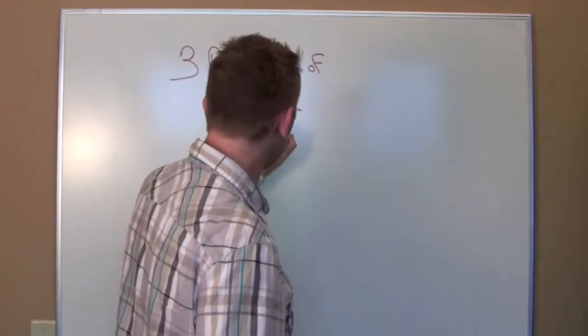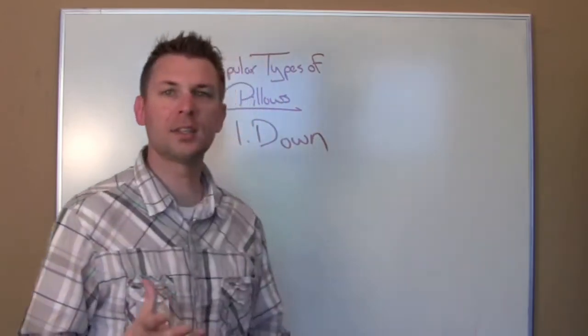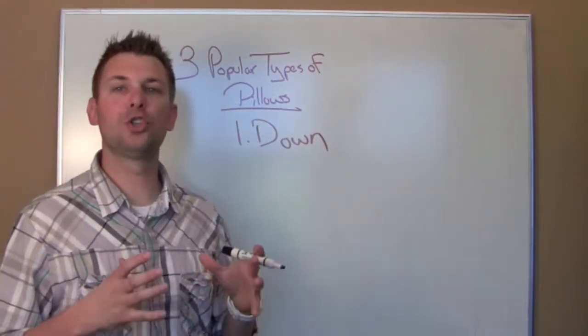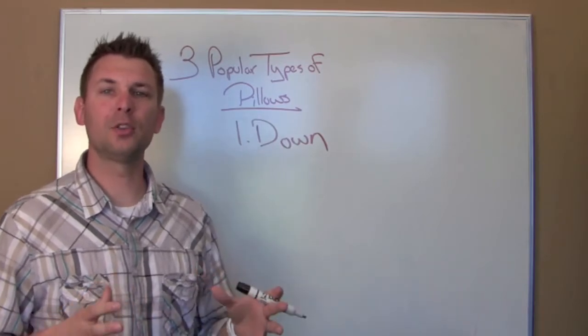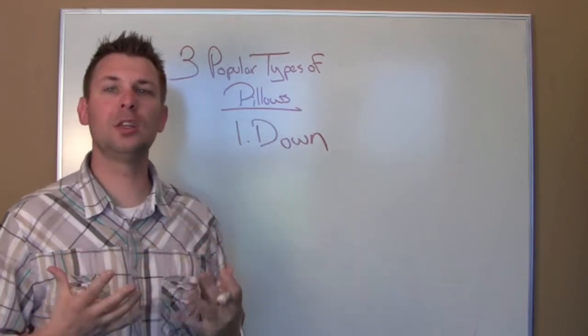The first most popular type of pillow is the down pillow and this is considered by many to be the most luxurious of all pillow types. And these pillows are actually made from the feathers that keep birds warm, especially in the winter.